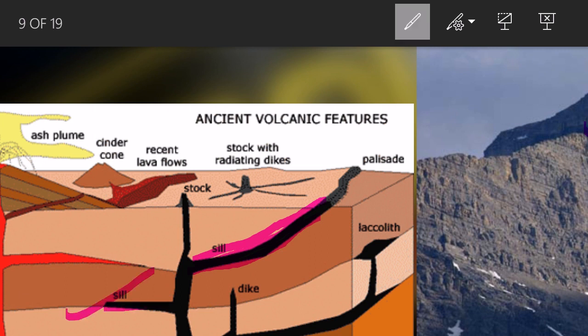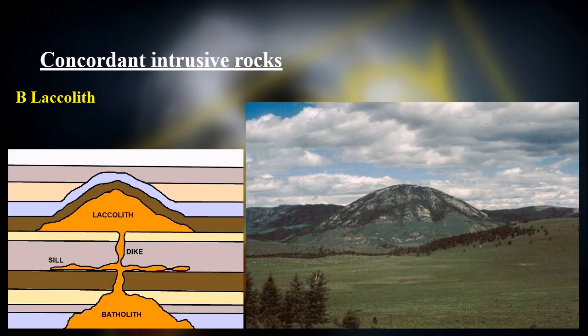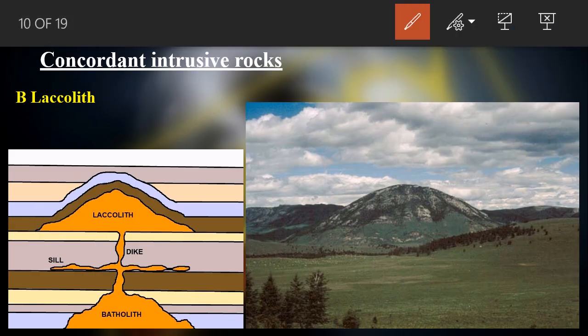Also concordant, we have the laccolith. Laccoliths are concordant intrusive bodies that have a flat base but a convex top. Magma from inside the earth is deposited forming a convex-up shape with a flat base — this type of structure is called a laccolith.